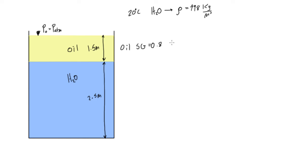So, all we have to do is take our density of our oil equal to 0.8 times density of our water. So, that means 0.8 times 998, that's going to give us a value of 798.4 kilograms per cubic meter.